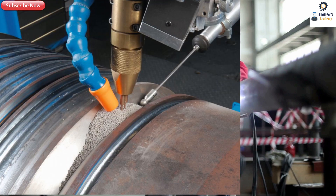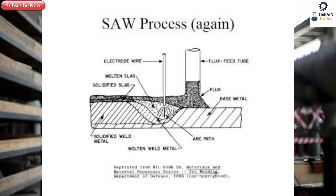Submerged arc welding is widely used in automatic welding processes. In this process, the welding electrode is fully submerged under a granular layer of flux. This flux is an electric conductor which does not resist the electric supply. The thick layer of flux prevents the molten metal from exposure to the atmosphere and ultraviolet radiation.